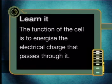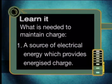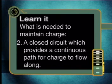Therefore, we can say that the function of the cell is to energize the electrical charge that passes through it. This means that an electric current can only be maintained in a closed circuit. Therefore, to maintain an electrical current in a conductor, the following is needed: a source of electrical energy which provides energized charge, and a closed circuit which provides a continuous path for charge to flow along.